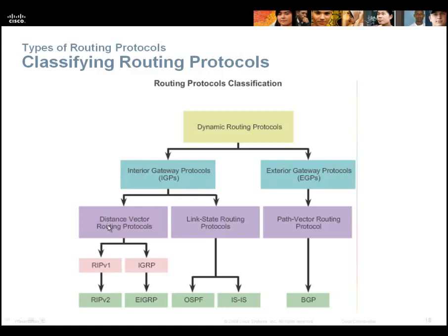Within interior gateway routing protocols you have two choices: distance vector or link state. We don't really do ISIS anymore in the Cisco program — we only deal with RIP, EIGRP, and OSPF. RIP version 1 and IGRP were the early classful models; nobody supports those anymore. We deal with RIP version 2, which supports subnet masks and classless inter-domain routing. EIGRP is Cisco proprietary, meaning you need all Cisco routers. OSPF is standards-based, so all routers support it. Depending on which book you read, EIGRP is described as distance vector, link state, or a hybrid of the two.